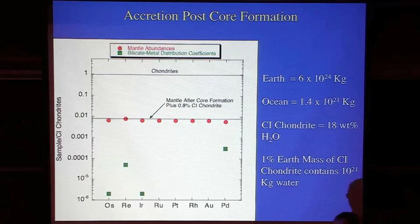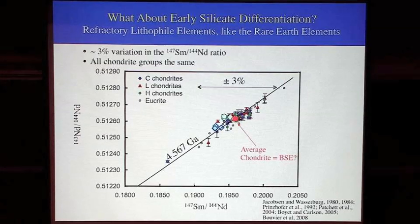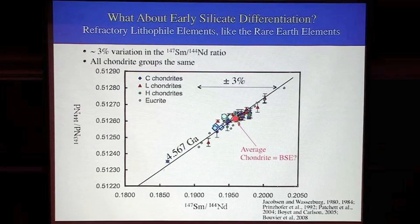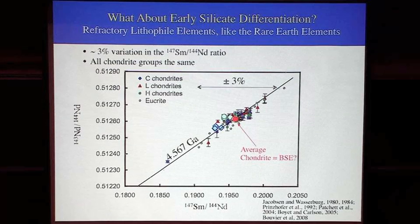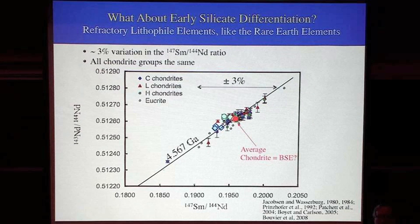So we know volatile depletion and core formation occurred pretty early. That leads us to what happened to the silicate Earth. We're going to look at a bunch of elements called refractory lithophile elements — refractory means not volatile, lithophile means they prefer silicate over metal. These elements won't be fractionated by core formation nor by volatile loss. Samarium and neodymium are two neighboring rare earth elements that each have isotope systems embedded in them. The Sm/Nd ratio is a measure of two nearby refractory lithophile elements. If they were strongly fractionated by nebular processes, meteorites would show a wide range in Sm/Nd ratio, but in fact they describe a range of only about 3% — confirming these elements are not fractionated by nebular iron-silicate or volatile-refractory separation.